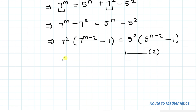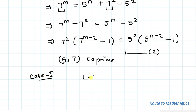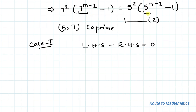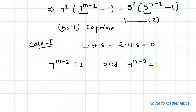Since 5 and 7 are co-prime numbers, in order to satisfy the equation we have two conditions. In the first condition, LHS minus RHS must equal zero. In order to satisfy this condition, each factor must equal 1 so that 1 minus 1 will be zero. So here I will write 7 to the power m minus 2 equals to 1 and 5 to the power n minus 2 equals to 1.